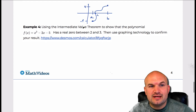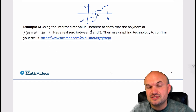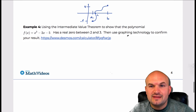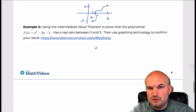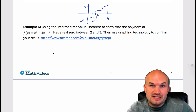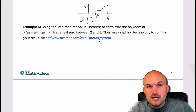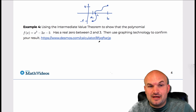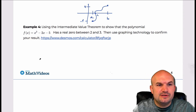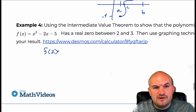In our example, we're using the Intermediate Value Theorem to show that the polynomial f(x) = x³ - 2x - 5 has a real zero between the interval 2 and 3, then use graphing technology to confirm. The key thing is we want to see if a zero exists, meaning for A and B — which would be 2 and 3, our endpoints — we have to have opposite values. So let's evaluate F of 2.